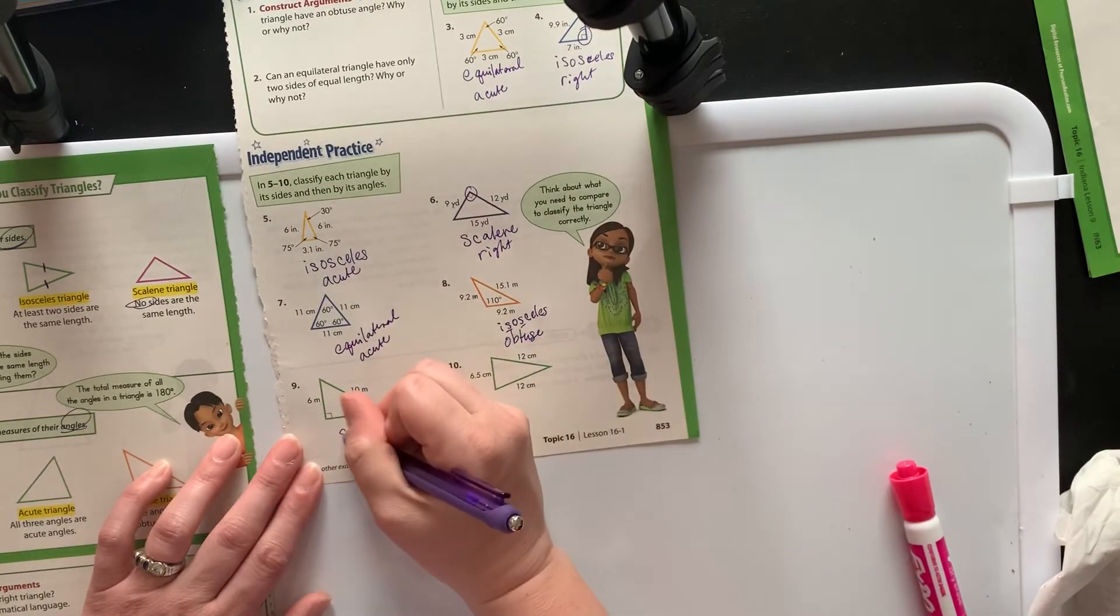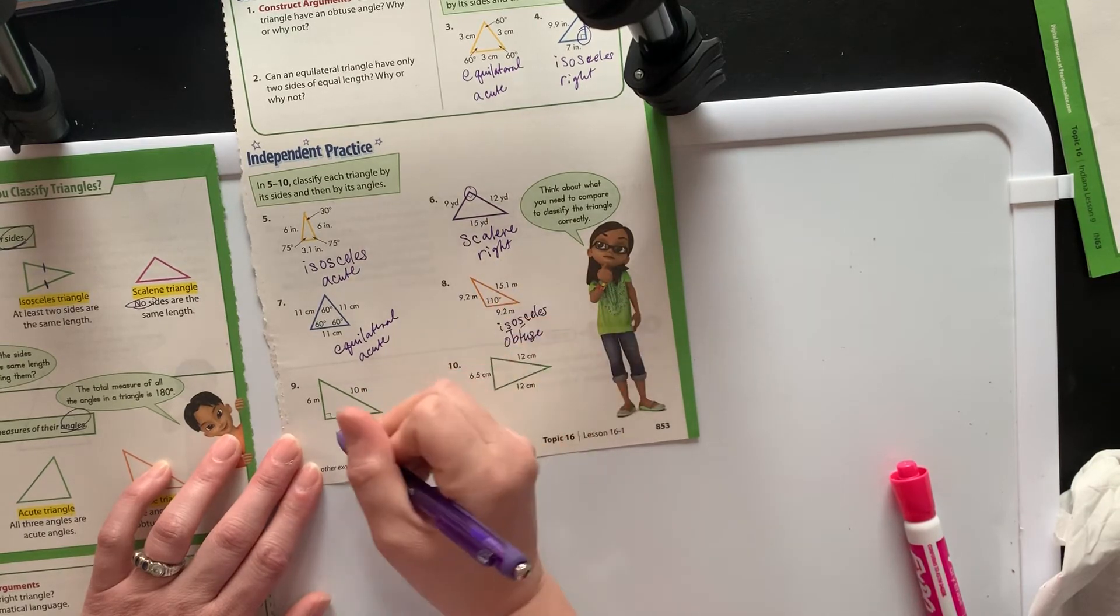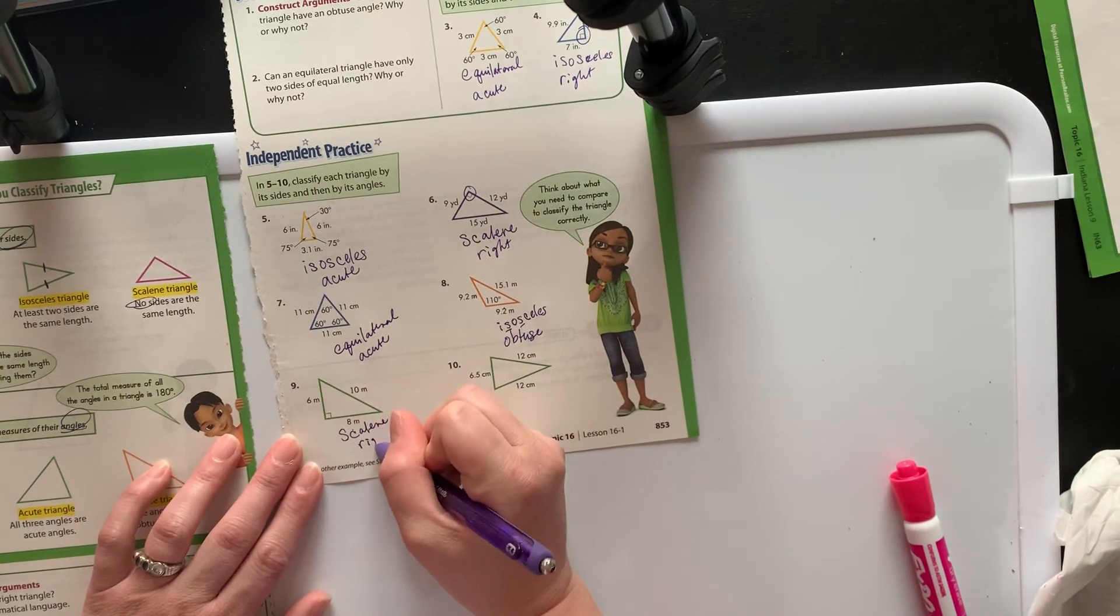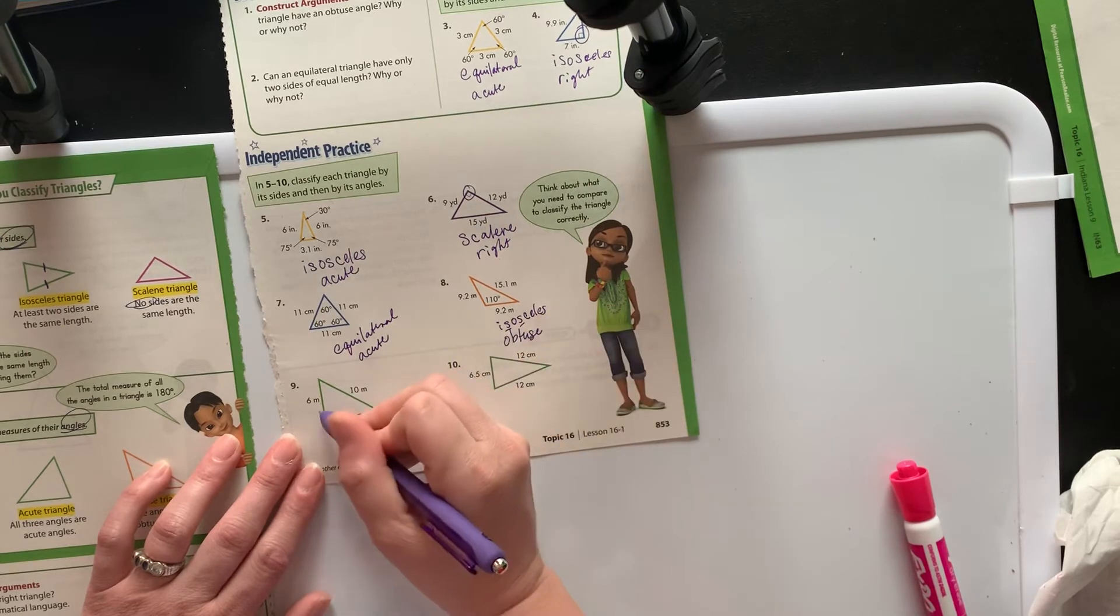6, 10, and 8, that's going to be scalene. None the same there. And then my right triangle right here because I've got my right angle.